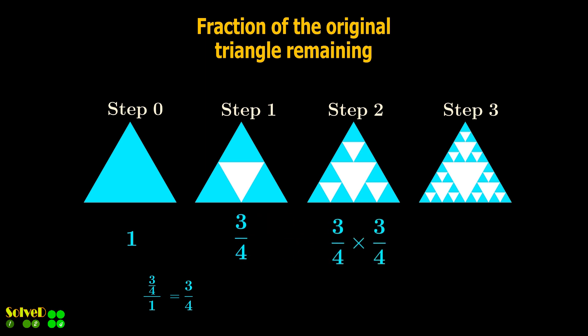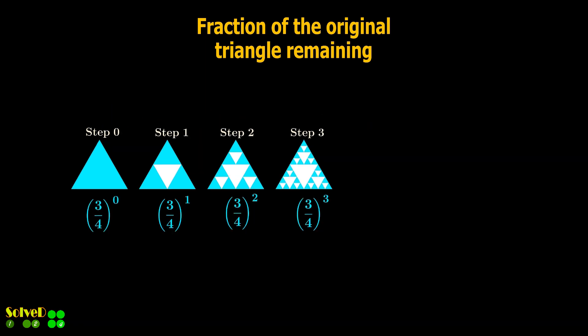Now multiplying by this consecutively, we can obtain the answers for step 2, 3 and so on. Following the pattern, we can obtain the number of blue triangles at step n. Here is the fraction remaining for step n.